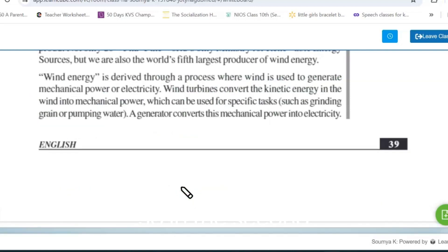So in the second paragraph, it is being told that wind energy is derived, that means how wind energy is being created through a process. It's a process where wind is used to generate the mechanical power or electricity. So wind energy and wind turbines convert the kinetic energy into mechanical power.